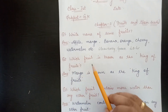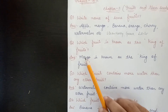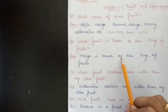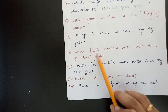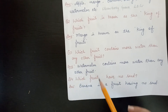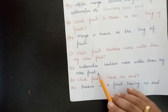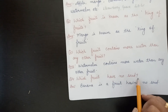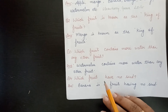The second question is: which fruit is known as the king of fruits? Mango — mango is known as the king of fruits. The third question is: which fruit contains more water than any other fruit? Watermelon. Watermelon contains more water than any other fruit. The last question is: which fruit has no seed? Banana is a fruit which has no seeds.